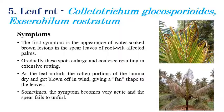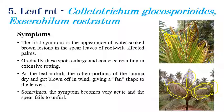Leaf Rot is caused by Colletotrichum gloeosporioides or Exserohilum rostratum. Root wilt-affected palms are the major target. The first symptom is water-soaked brown lesions, which later coalesce and cause extensive rotting of all leaves. Small spots enlarge and coalesce, and sometimes the spear fails to unfurl. When the lamina dries, it can be blown off by wind, giving the leaves a fan-shaped or wing-like appearance.